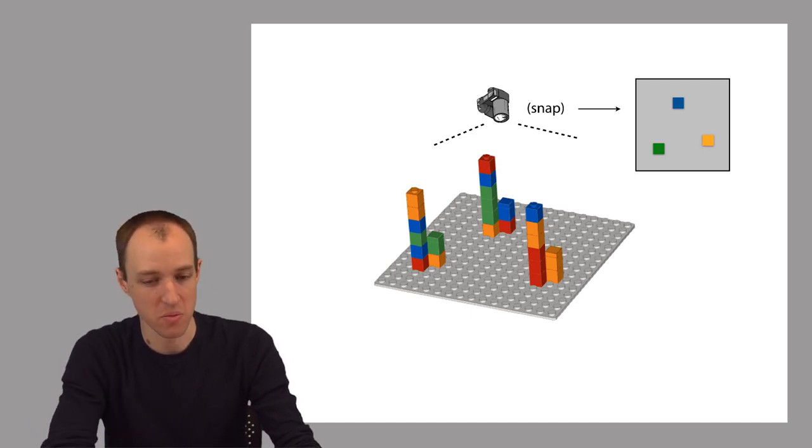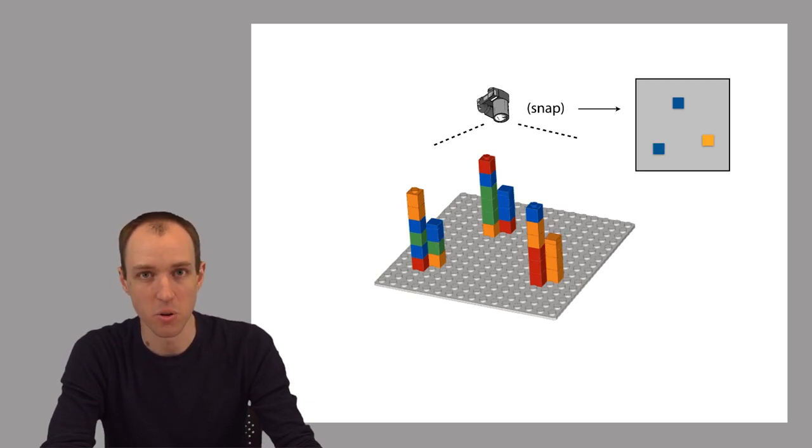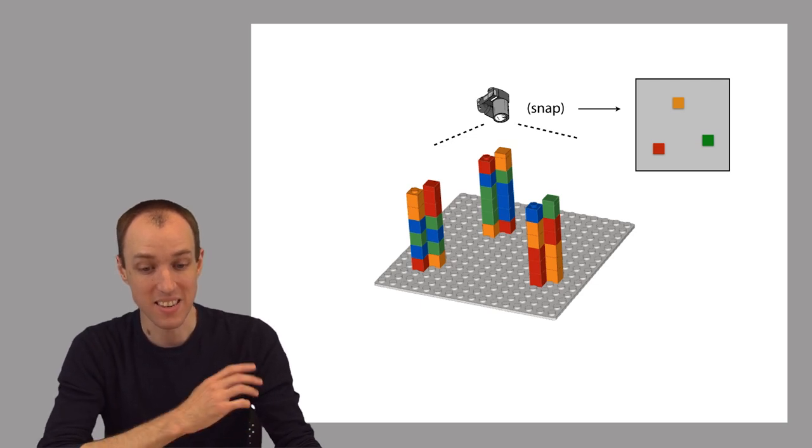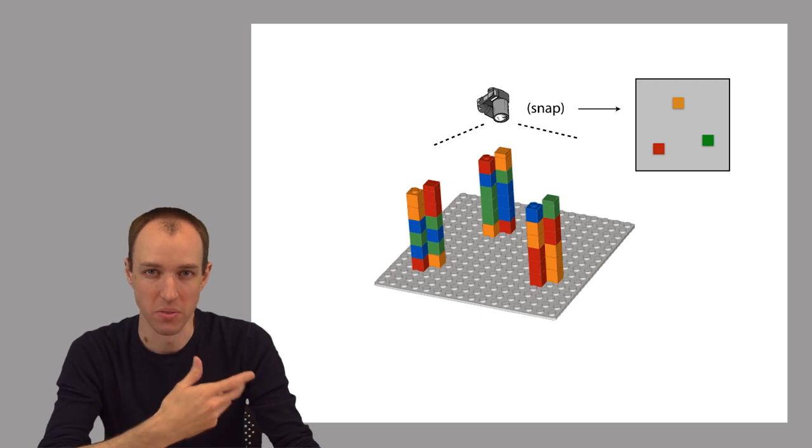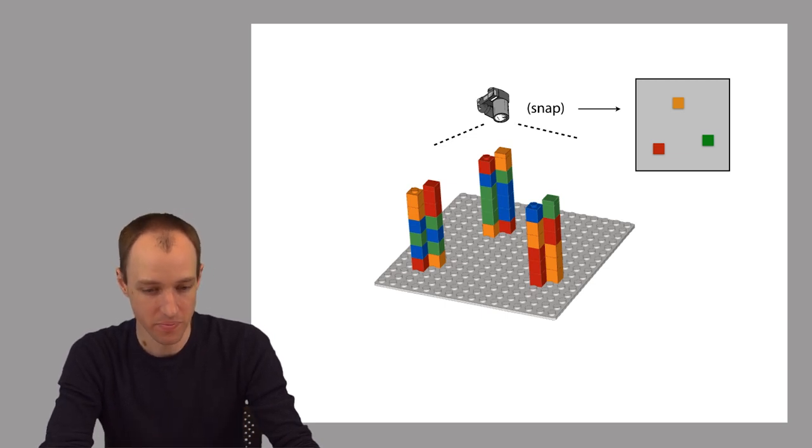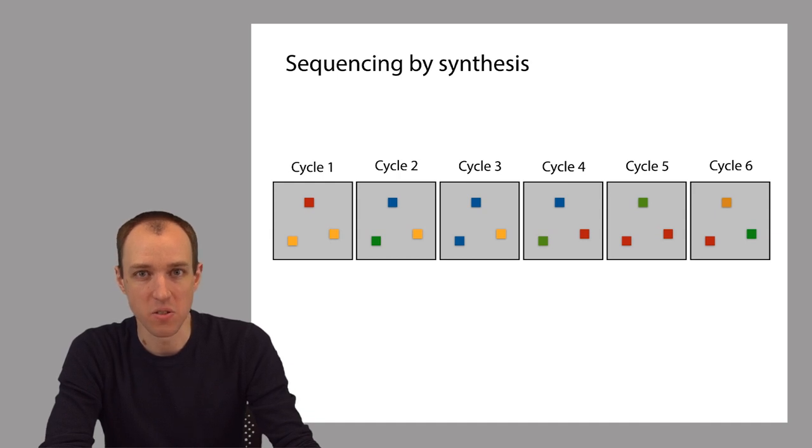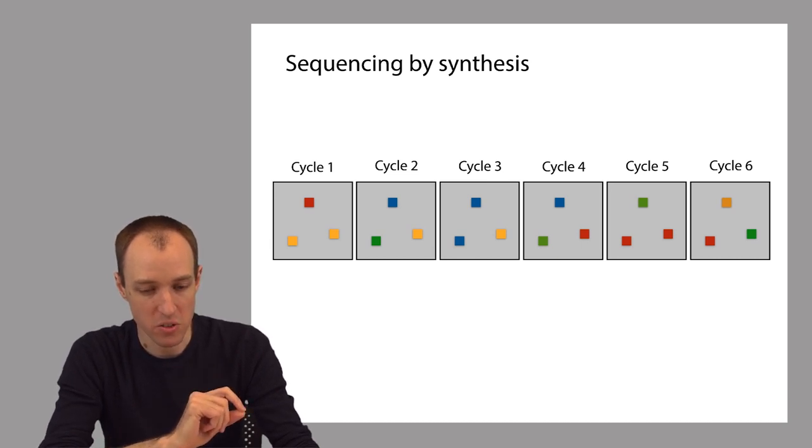And we just continue to iterate this process. So at the end of the day, we get a series of photos. Here's the next one. And here's the next one. One per sequencing cycle. We use the term sequencing cycle to describe one round of the process that I just described. So at the end of the day, we have a series of photographs that look like this. One per cycle.